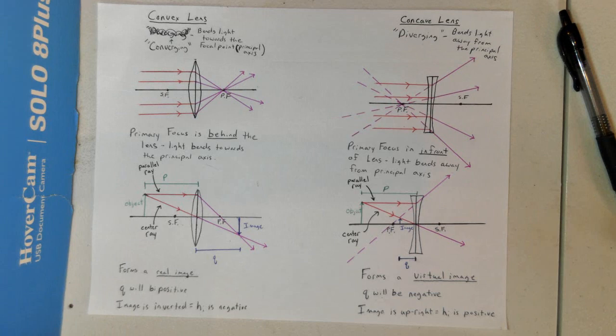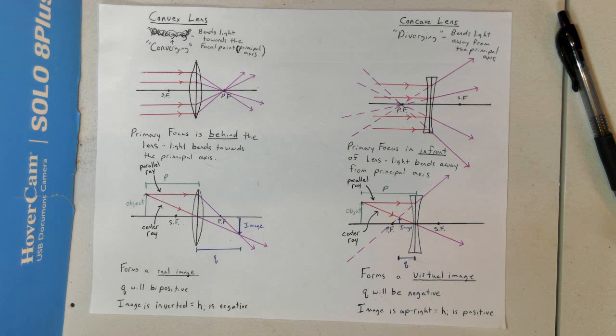We're going to continue with what we've been talking about as far as light bending and changing direction. We've talked about convex mirrors and concave mirrors in which light is being reflected back, and we know no light can make it through a mirror. So our next step is to talk about lenses.